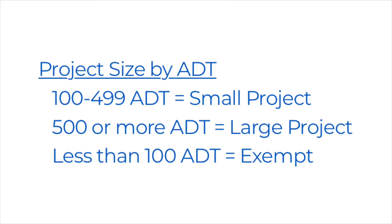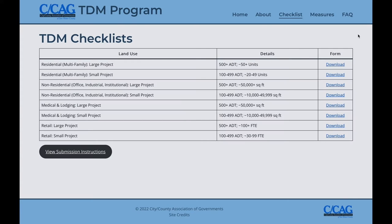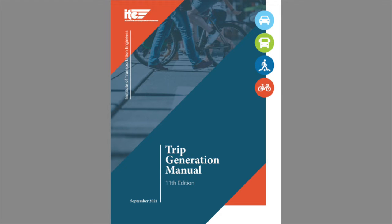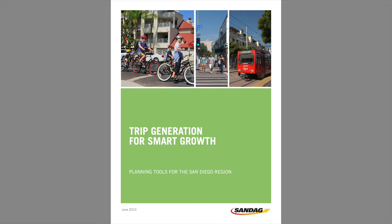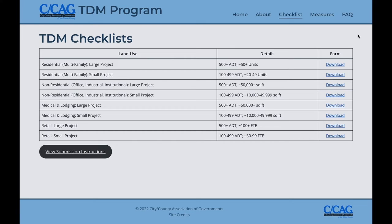Projects with less than 100 ADT are completely exempt. ADT is often documented in the form of a traffic impact analysis report. In instances where a traffic impact analysis report is not readily available, there are multiple verified methods to calculate ADT. Examples include the Institute of Transportation Engineers Trip Generation Manual, the U.S. Environmental Protection Agency Smart Growth Mixed Use Trip Generation Tool, and the San Diego Association of Governments Trip Generation for Smart Growth. These are just some examples — there are others.